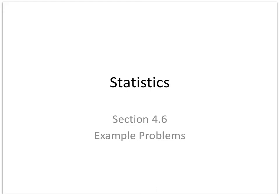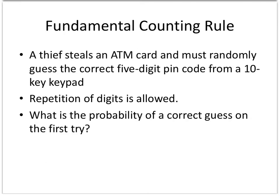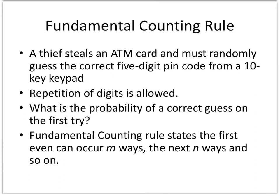This is section 4 on counting. We're going to use the Fundamental Counting Rule, count using factorial rules, and then look at combinations. A thief steals an ATM card and must randomly guess the correct five-digit PIN code from a 10-key keypad. Repetition of digits is allowed, meaning you could use the same number twice, three times, and so on. What is the probability of a correct guess?